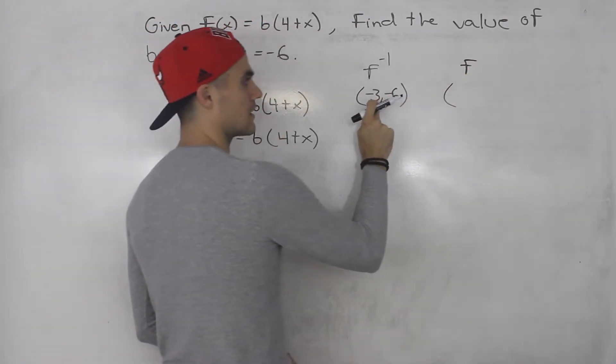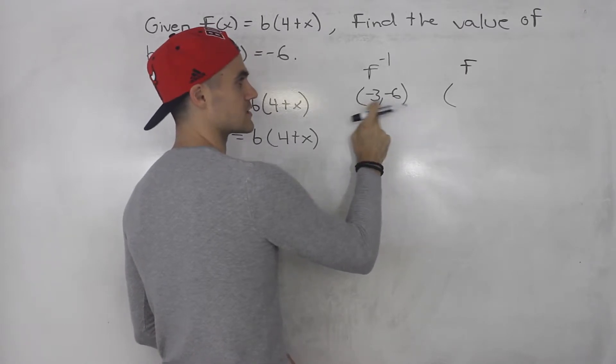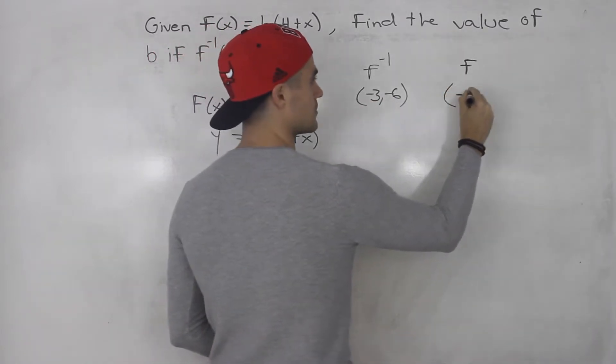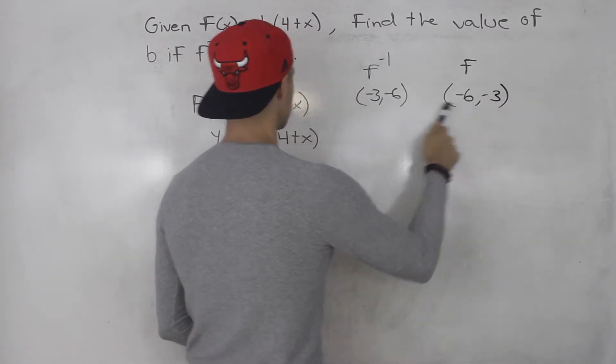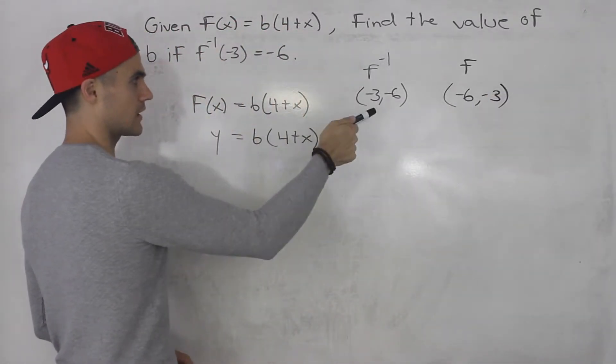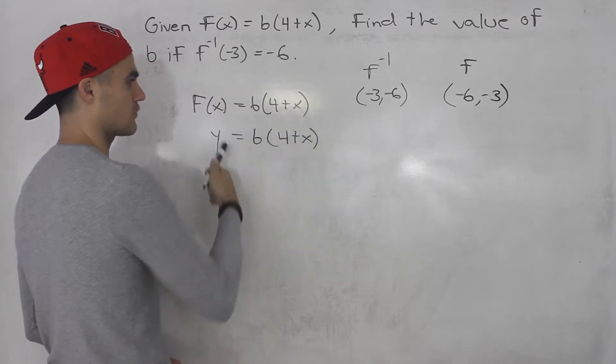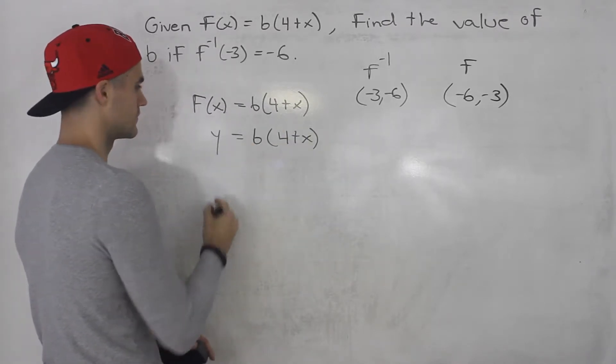It's going to be the inverse of this coordinate. So it's just the coordinate switched. So it's going to be (-6, -3). And then you could just plug this in here. So we plug in -6 for x and -3 for y, and then just solve for b. It's that simple.